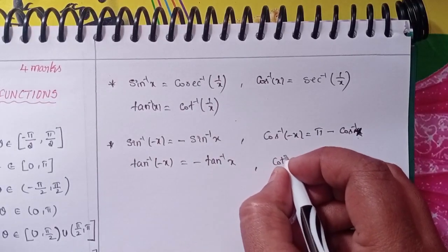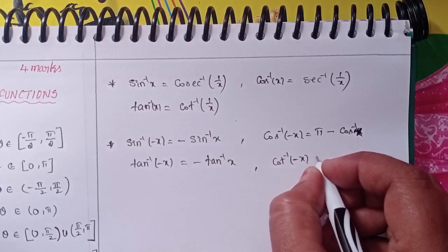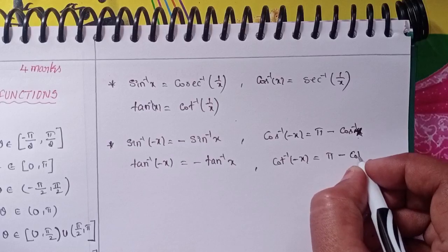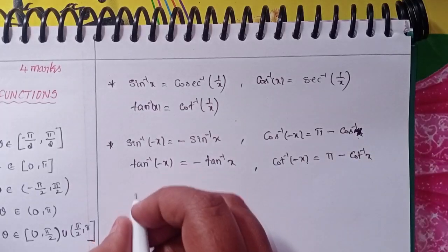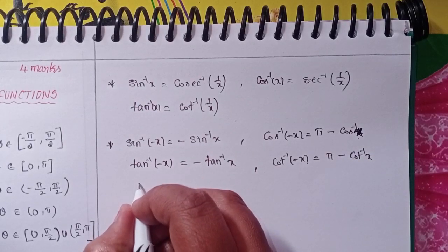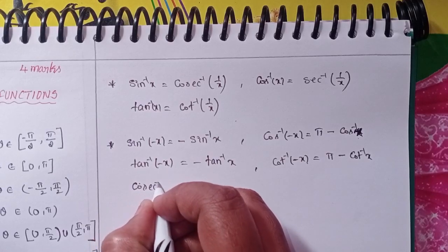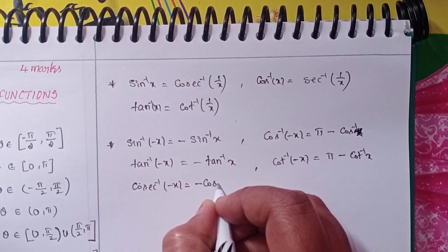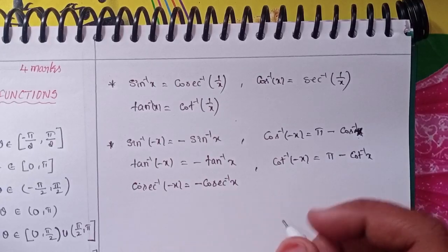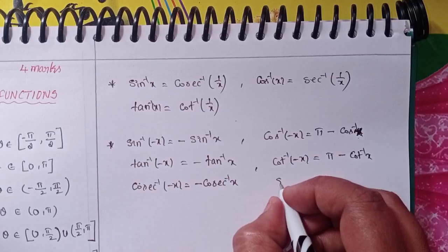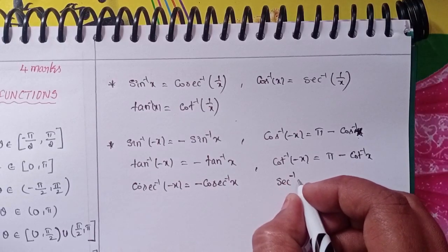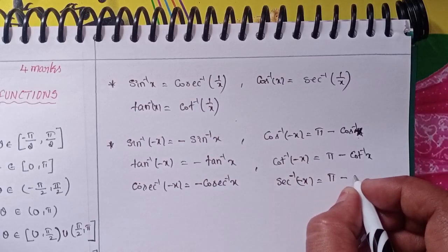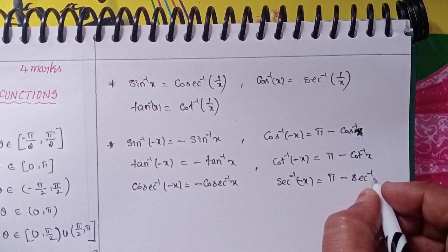cot⁻¹(−x) = π − cot⁻¹(x). cosec⁻¹(−x) = −cosec⁻¹(x). sec⁻¹(−x) = π − sec⁻¹(x).